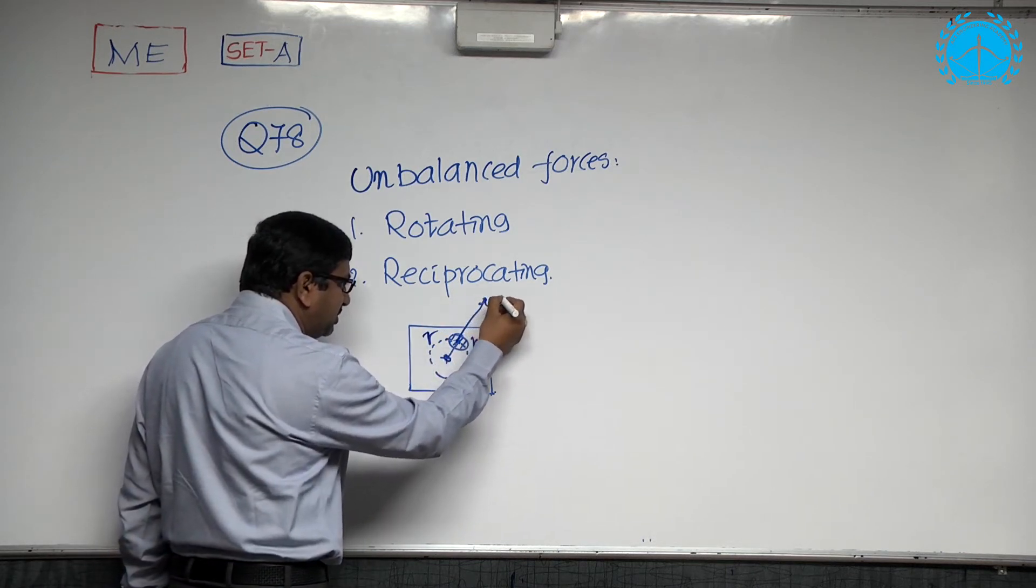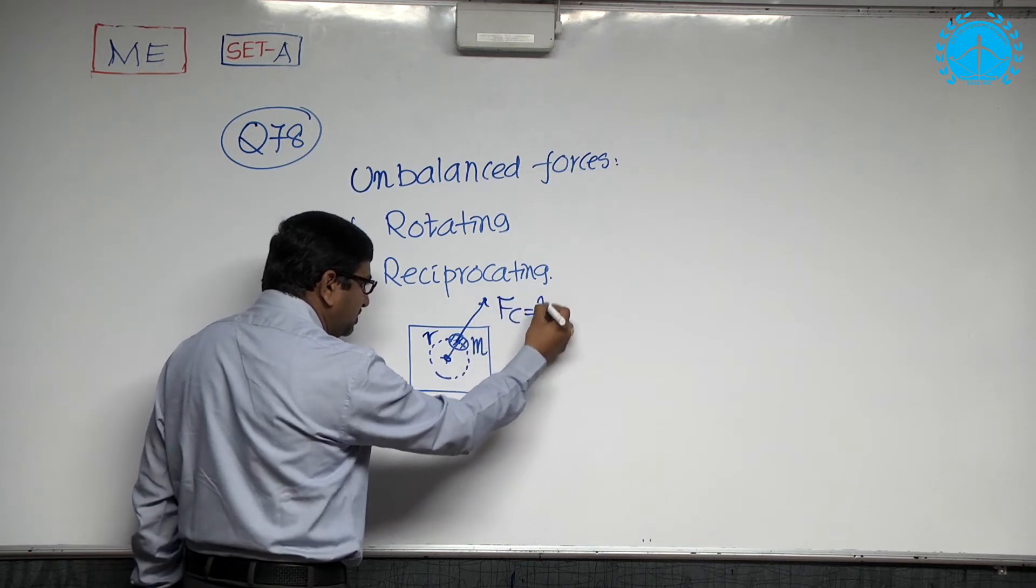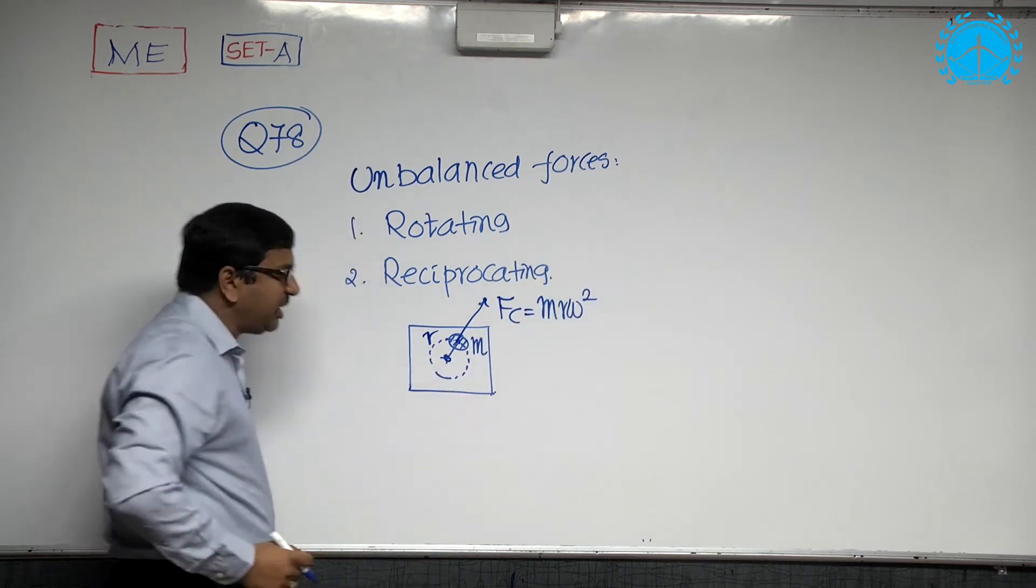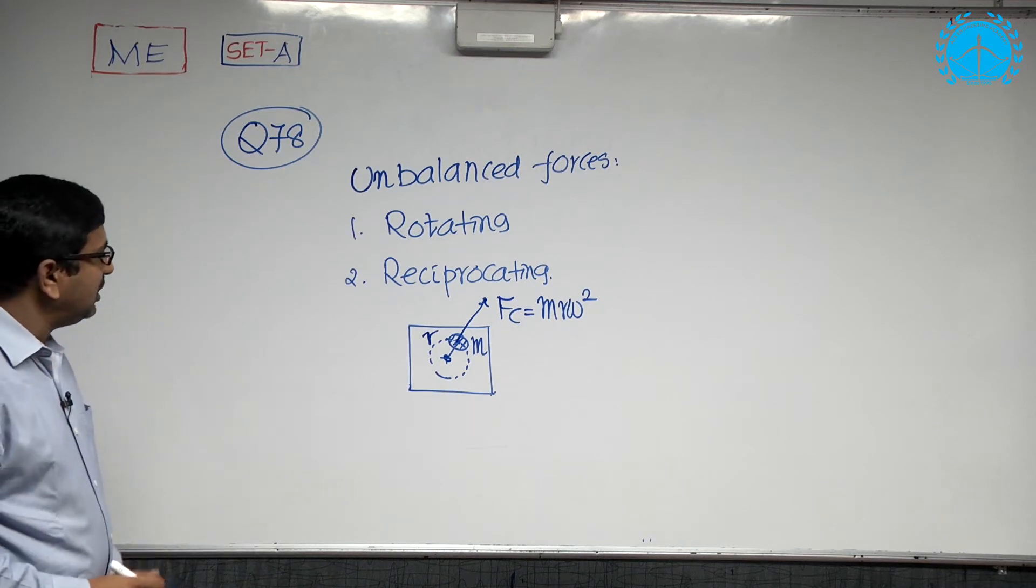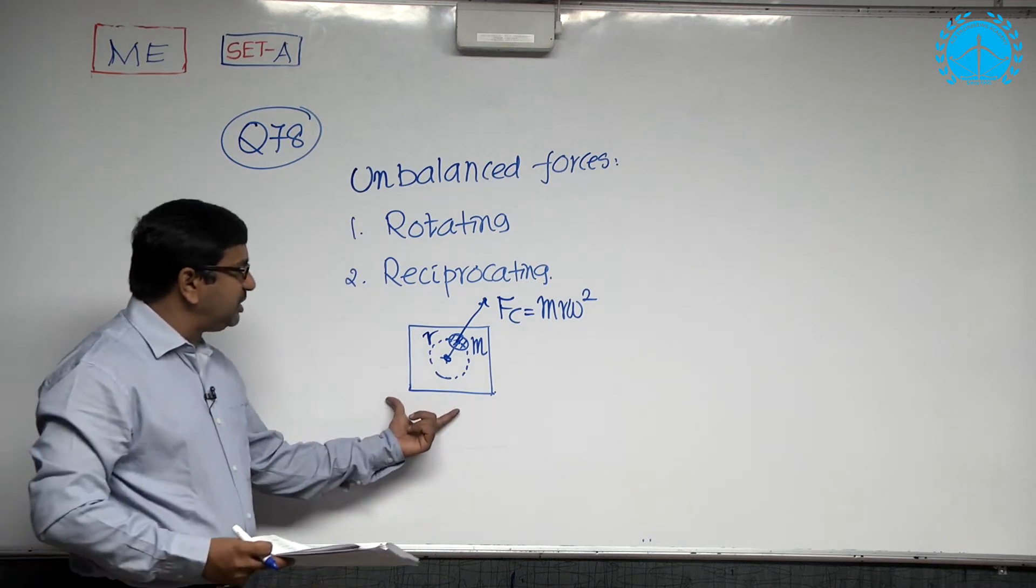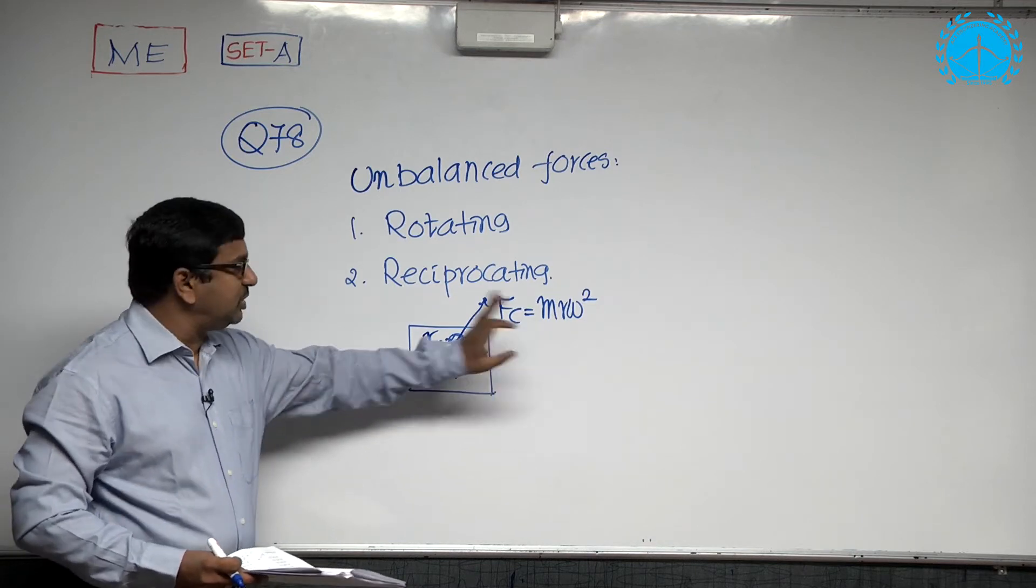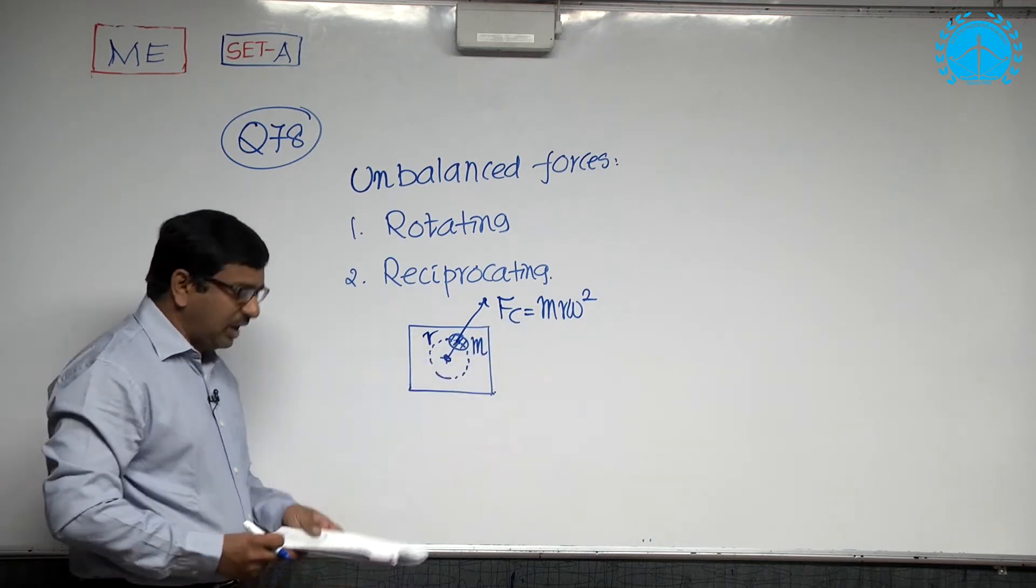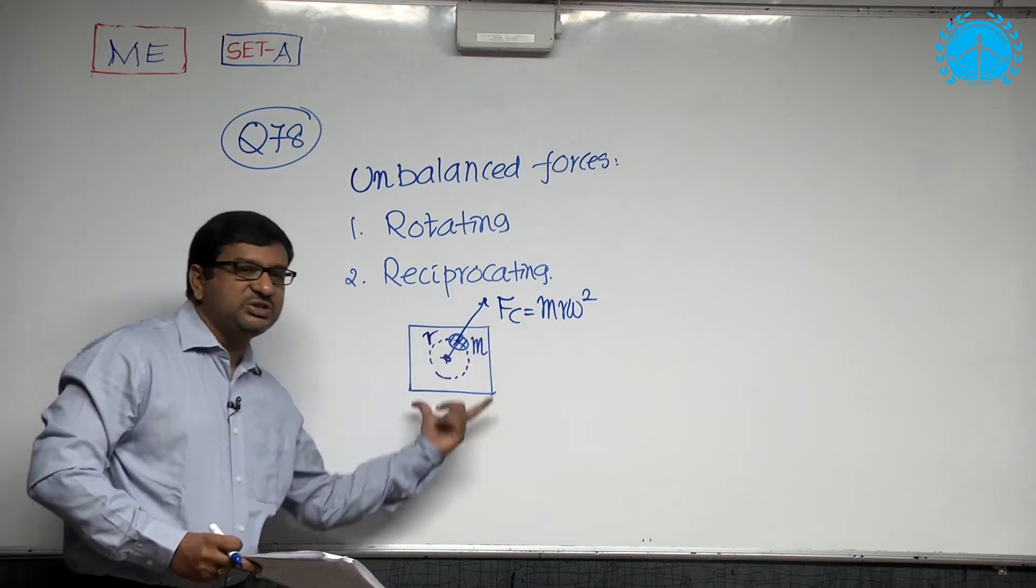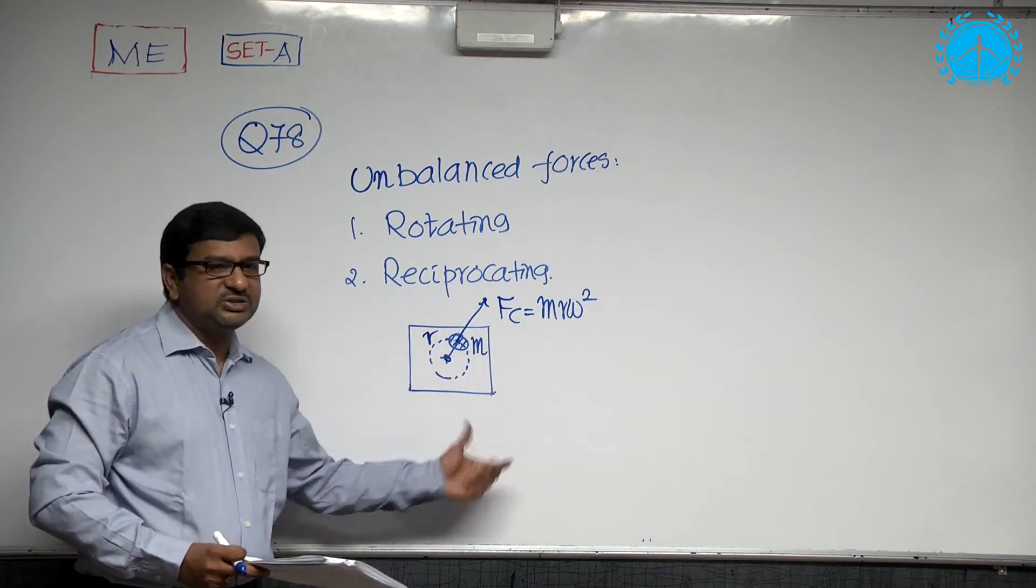Then it will be subjected to a centrifugal force of m r omega squared, where omega is the speed of the machinery. When it is subjected to deviation from its axis of rotation, this unbalanced force of m r omega squared is the main reason for the vibrations in the system.